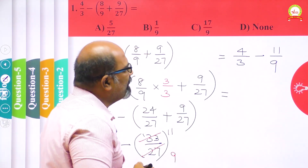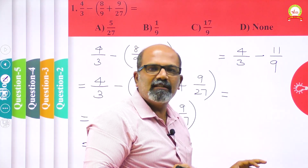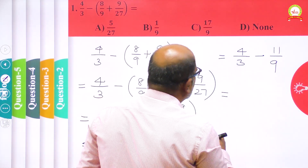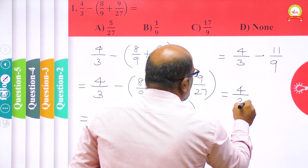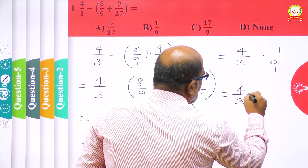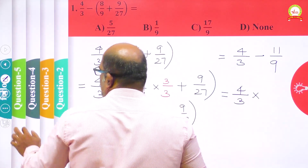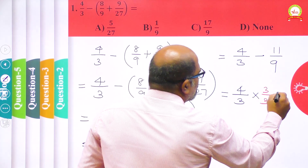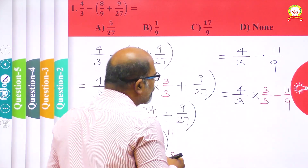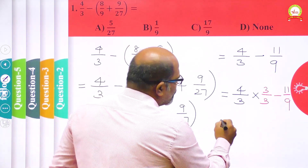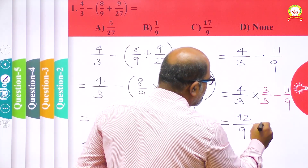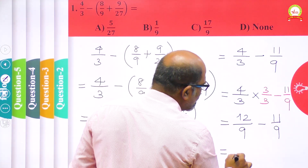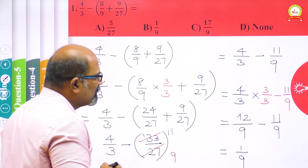We have to make the LCM again between the denominators 3 and 9. The LCM between 3 and 9 is 9, so I want to make both denominators 9. I take 4/3 and multiply by 3 in the numerator and 3 in the denominator, giving 12/9, minus 11/9. We can subtract: 12 minus 11 gives 1/9 — that is the answer for this question.